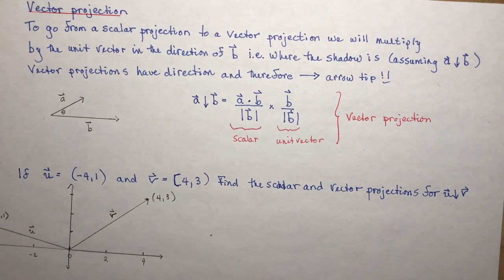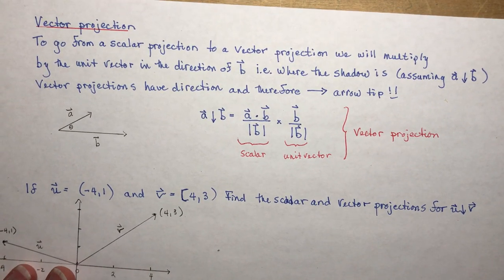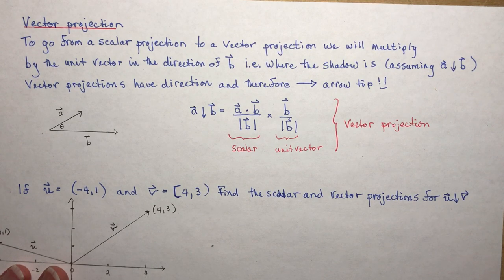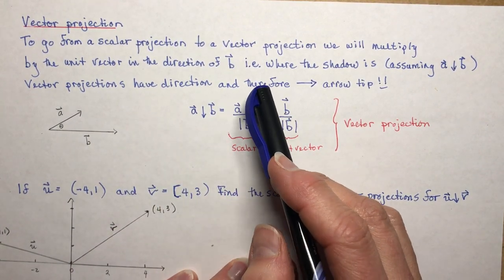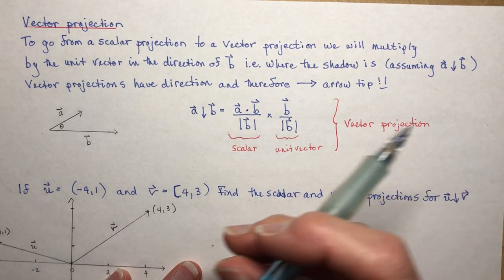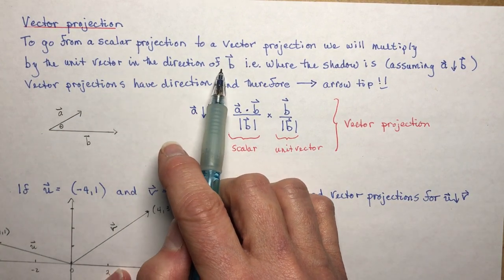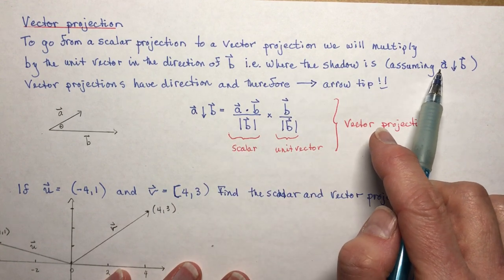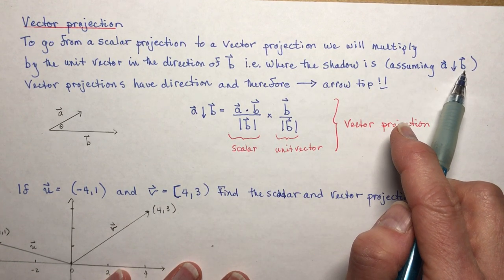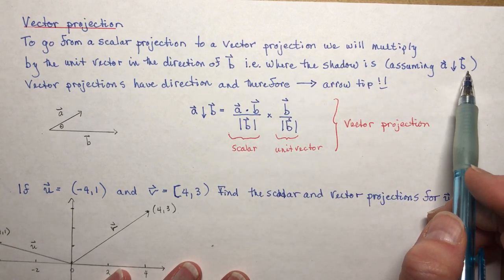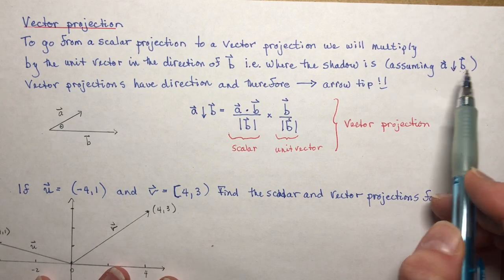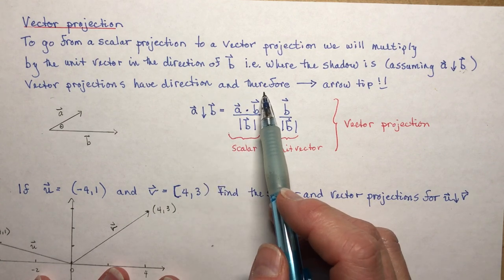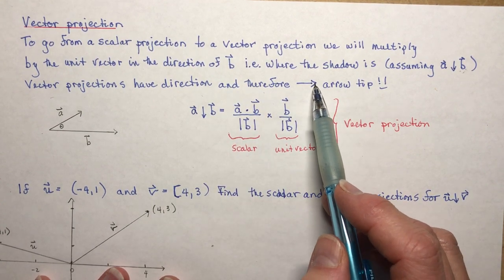Now let's talk about the vector projection. There's not a big difference from scalar projection — to go from a scalar projection to a vector projection, we simply multiply by the unit vector in the direction of B (assuming we're doing A projected onto B). Vector projections have direction, and so you add an arrow tip. The formula is the scalar projection multiplied by the unit vector B̂.